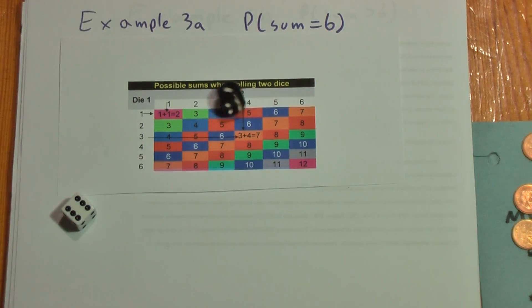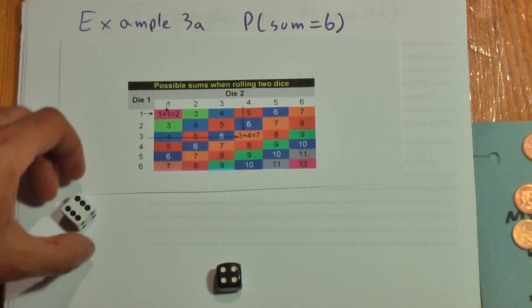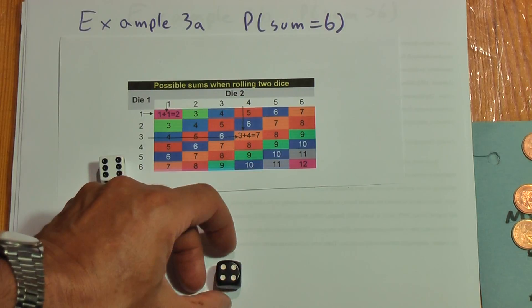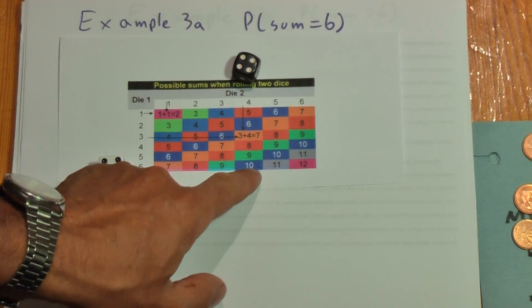So let's see another possibility. 6 and 4. 6 on the white and 4 gives me a sum of 10.